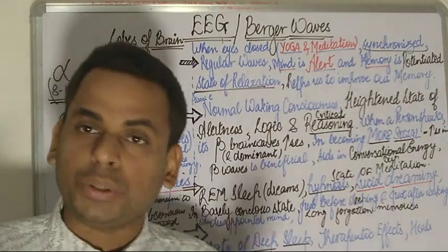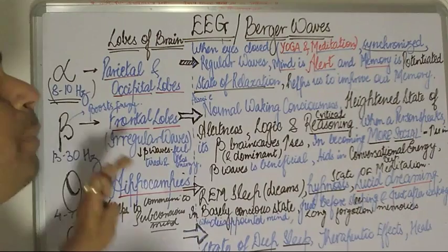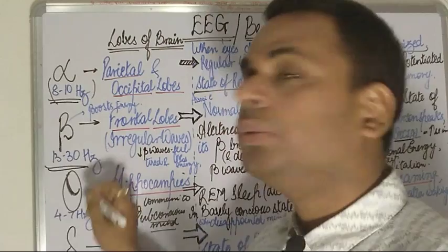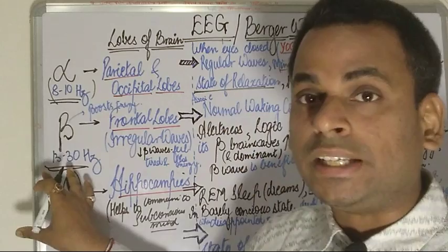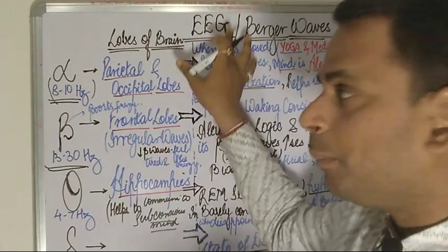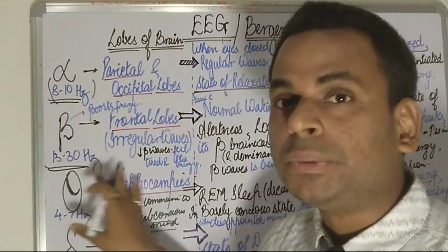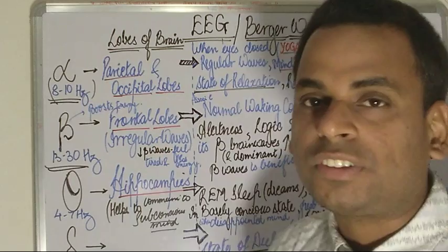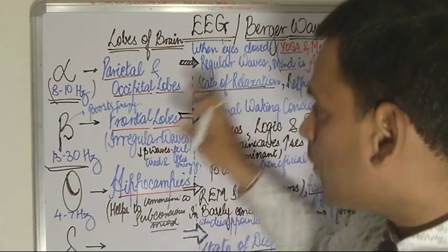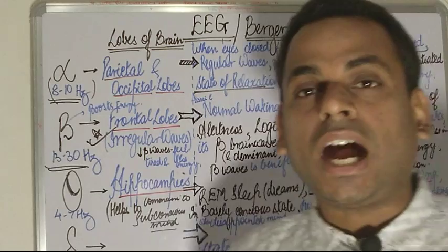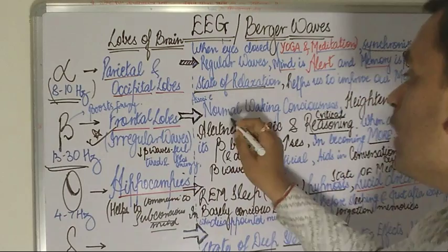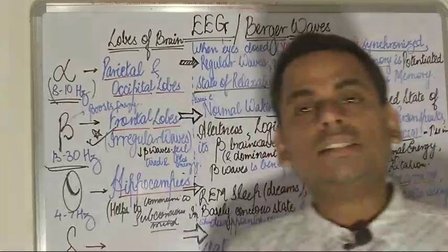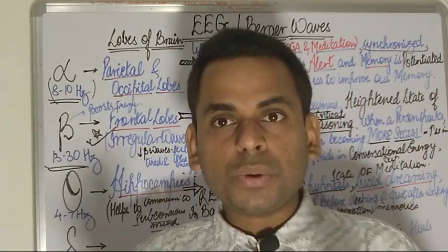Moving on to beta waves: beta waves have a frequency of 13 to 30 hertz, which is the highest frequency among all brain waves. Such waves are produced from the frontal lobe of the brain. The distinguishing feature of beta waves is that they are irregular waves, associated with normal waking consciousness. Beta waves are produced when you are concentrating, most active and alert.